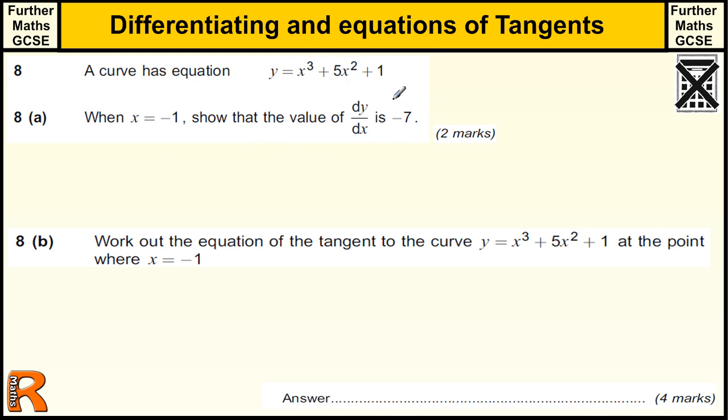So what we need to do is differentiate this expression. We need to take each term in turn and use this rule where if we're trying to differentiate x to the n, then we take 1 off the power so it becomes n minus 1, and the n comes down in front of the x. So we've got n lots of x to the n minus 1.